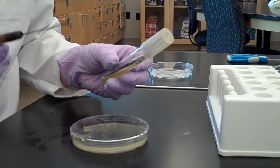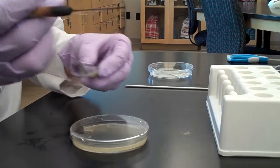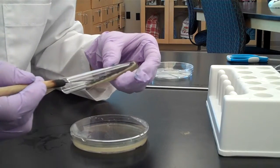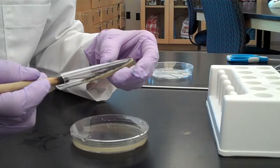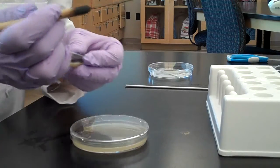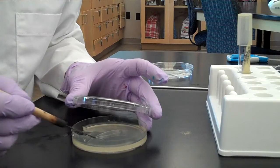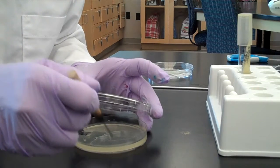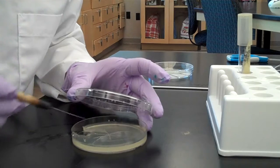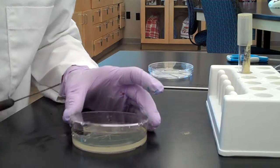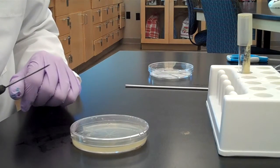Using a sterilized dissecting needle, pick up mold spores by scraping the needle just inside the outer edge of the unknown mold culture. Transfer these spores to the SDA plate by barely scratching the needle onto the surface of the agar making a small asterisk pattern. Replace the lid and now it's ready to be incubated.